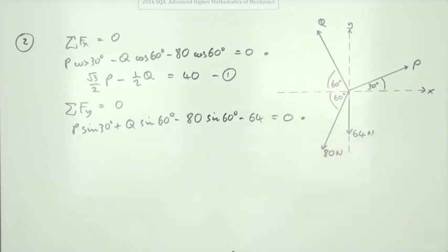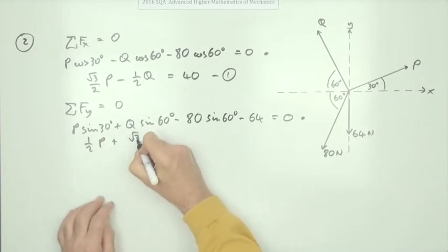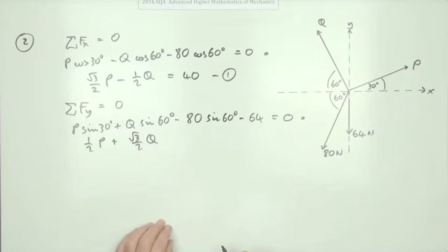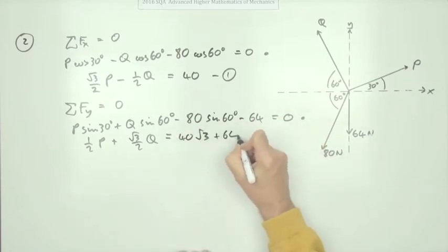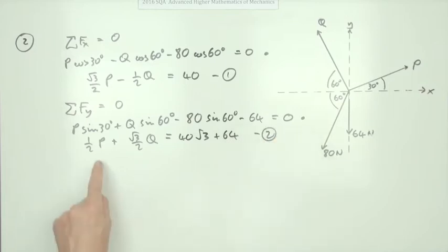That's the second mark, but I'll tidy it up, because we know what these little parts come to. The sin of 30 is a half, so a half of P, and that's root 3 upon 2, plus root 3 upon 2Q, minus, that's root 3 upon 2, so that's going to be 40 root 3, but I'll bring it over, so I'll put equals plus 64 gives me another equation in P and Q. But that doesn't give me a mark.